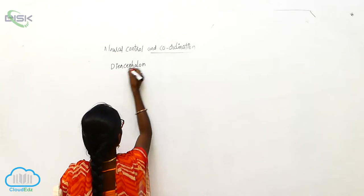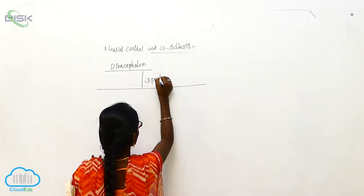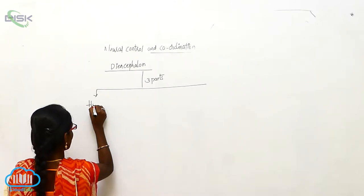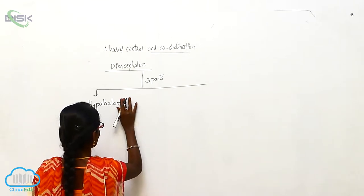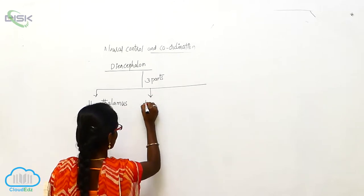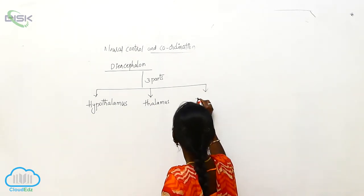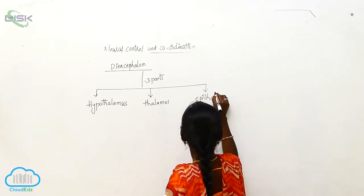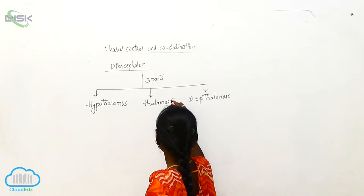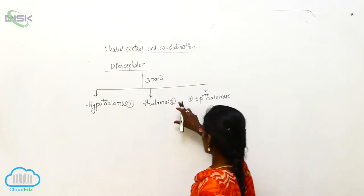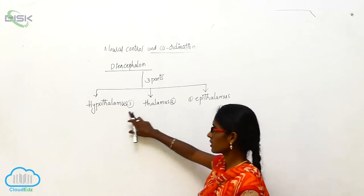The diencephalon divides into three parts: the epithalamus, thalamus, and hypothalamus.